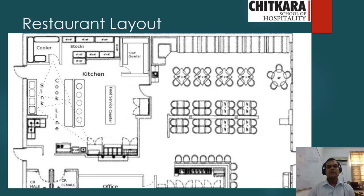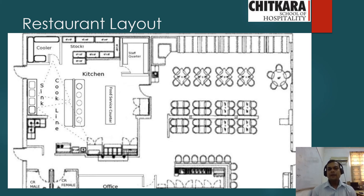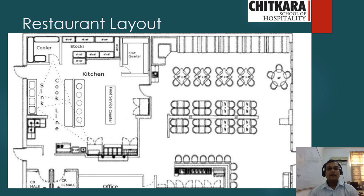Now let's talk about the restaurant layout, which covers both the kitchen and the service area. The international standard ratio between the restaurant area and kitchen area is that 30% to 40% of a restaurant's area is allocated to the kitchen. This space varies between fine dining and coffee shop style restaurants. The kitchen is located next to the restaurant or designed as a seamless kitchen.